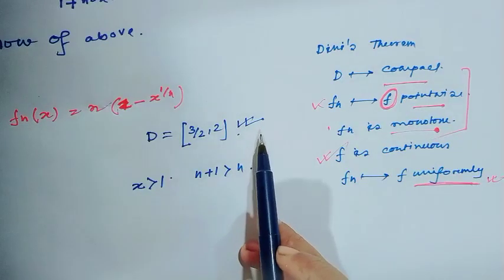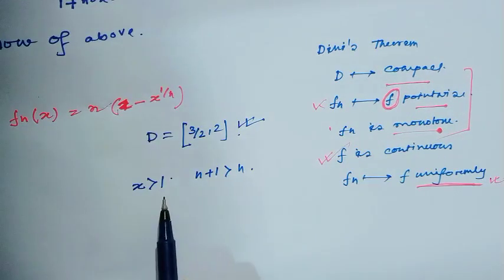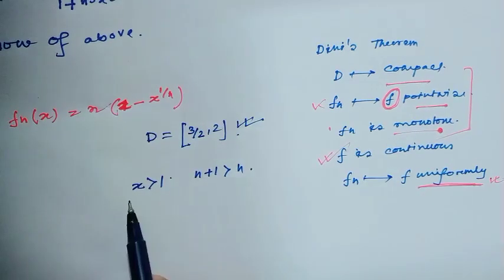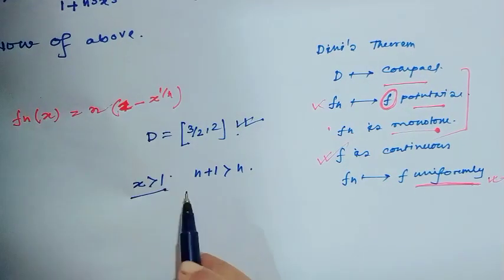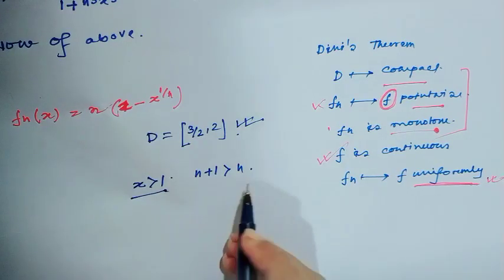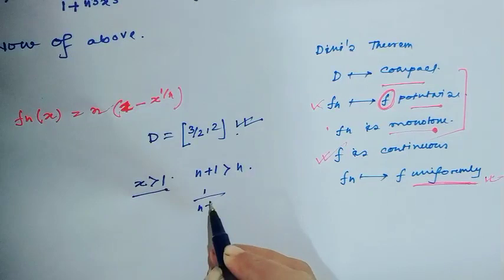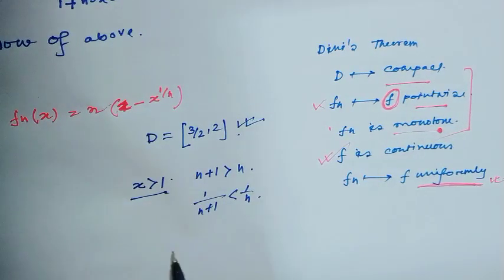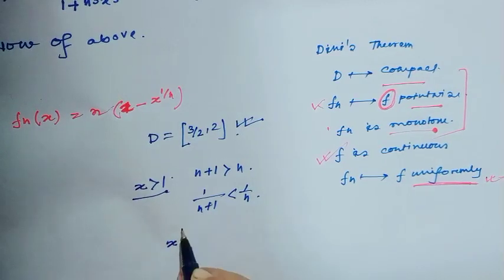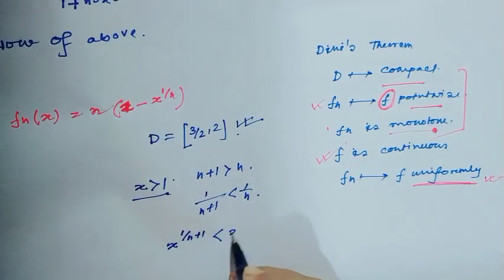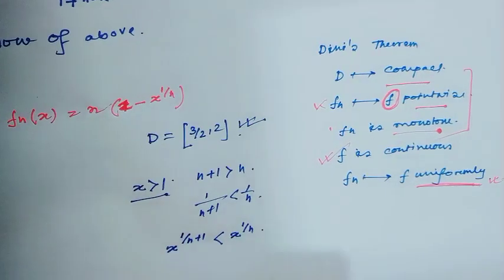The given set [3/2, 2] is compact. Next, I will check if this function is monotone. Here x is greater than 1, so obviously n+1 is greater than n, then 1/(n+1) is less than 1/n. That means x to the power 1/(n+1) is less than x to the power 1/n.